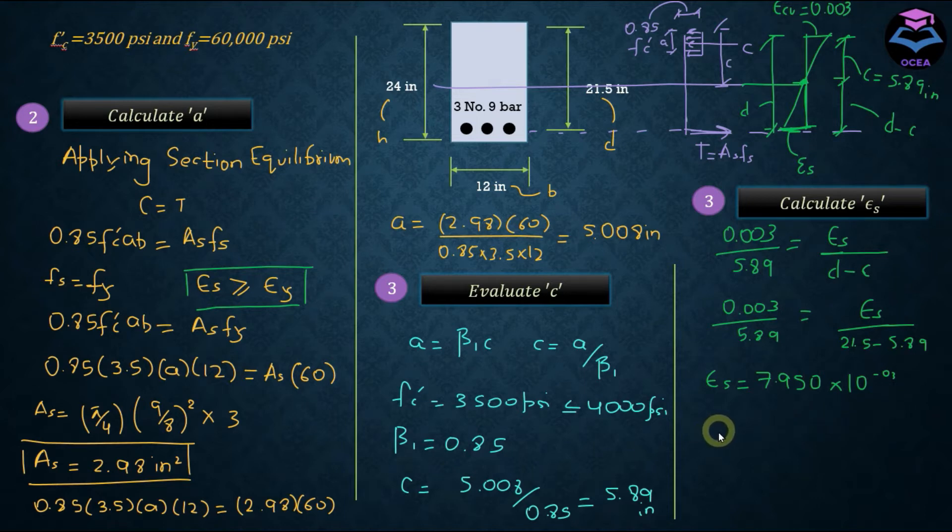The yield strain of steel can be calculated using Hooke's law, which gives you a relation between stress and strain of steel. So strain in steel is equal to stress in steel divided by modulus of elasticity represented by capital E. And Fy is equal to 60 ksi, and epsilon y from here is equal to 0.00689.